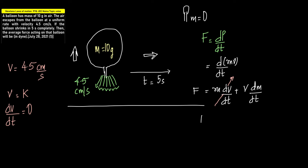Which means what we get is F equals v into dm/dt. Therefore, F equals what is v? Velocity is 4.5 centimeters per second.